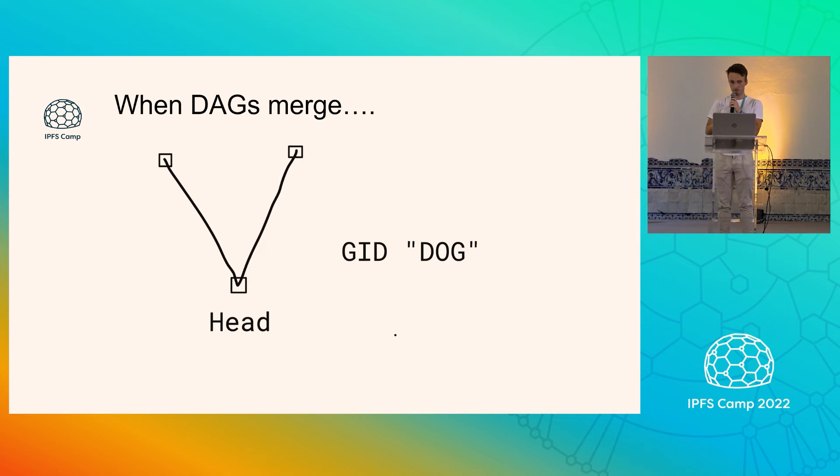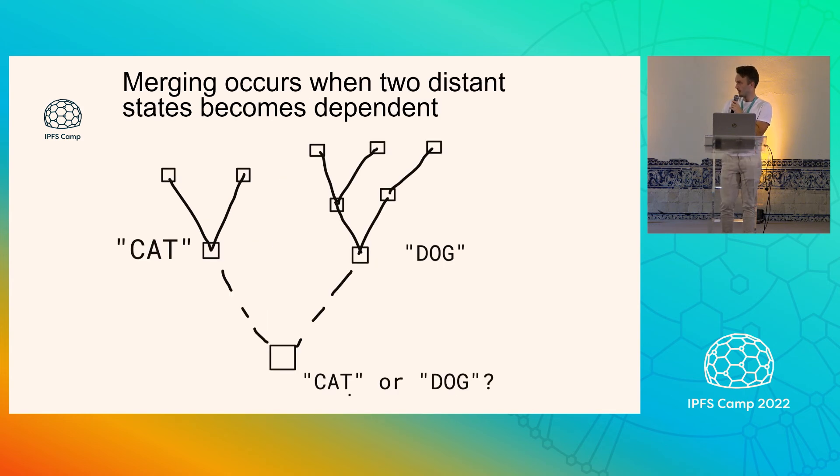So to go a little deeper in the technology, merging events can happen. Two distant states can merge. Imagine that you have a ledger in two different countries. When one makes a transaction, one comes to another, those two states become dependent. And we've got the same situation here. So imagine the dog graph here has a graph ID called dog, and we have a cat, and we want to merge this. Imagine this is a Photoshop file or whatever.